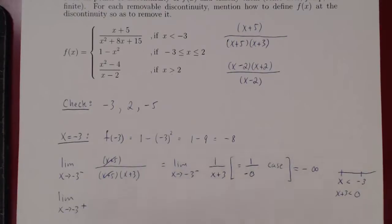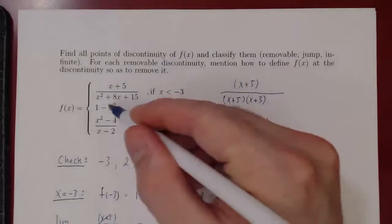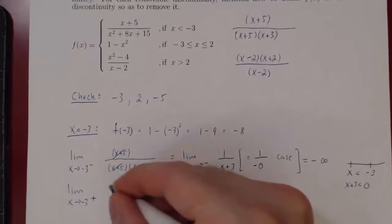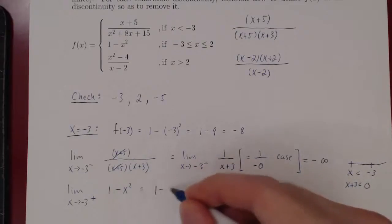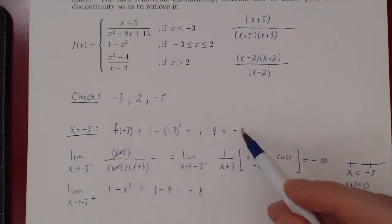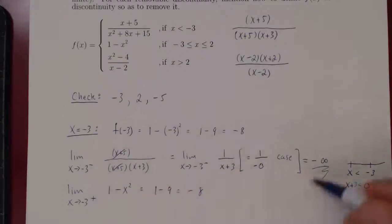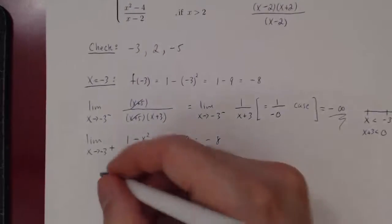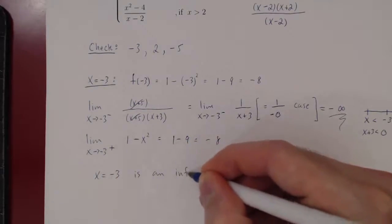Let's check the right-hand limit regardless. When x approaches negative 3 from the right, the function is 1 minus x squared. As x approaches negative 3, we get 1 minus 9, which equals negative 8. So the value of the function is negative 8, the limit from the right is negative 8, but the limit from the left is negative infinity. Therefore, x equals negative 3 is an infinite discontinuity.